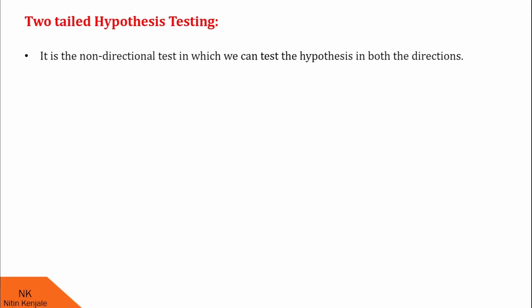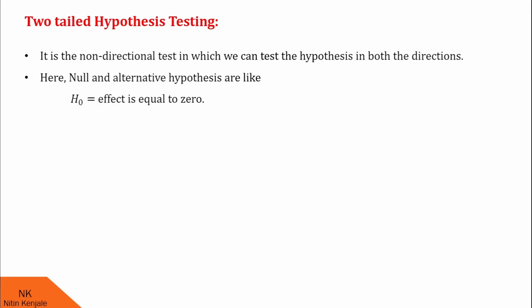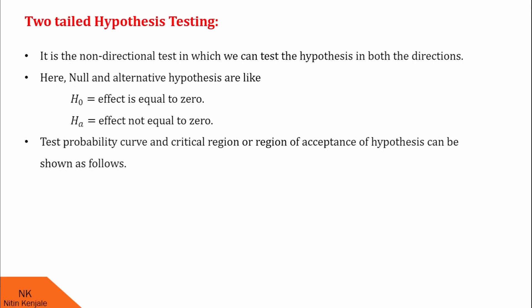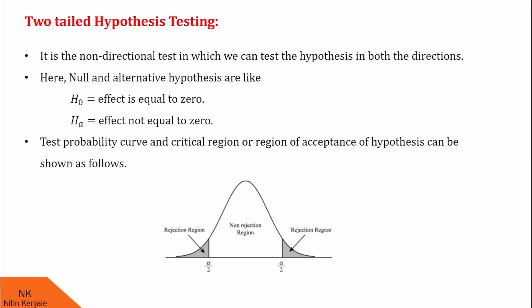Now let us see what is two-tailed hypothesis testing. It is the non-directional test in which we test the hypothesis in both directions. Here, null and alternative hypothesis are: H0 is effect equals 0, then HA will be effect is not equal to 0, which can be concluded as effect is greater than 0 or less than 0. So this is a two-directional test. The probability curve and the critical region or region of acceptance of the hypothesis can be shown as follows. Here you can see that there are two regions where you can reject the hypothesis. Therefore, this is called two-tailed hypothesis testing.